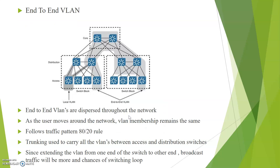So now let us go to end-to-end VLAN. End-to-end VLAN spans the entire network, meaning it is distributed over the entire network. Assume I have configured VLAN 2, 3, and 4 here — the same set of VLANs I will configure over this switch block also. So as the user moves around the network, the VLAN membership remains the same. Since this is an end-to-end VLAN, it follows the traffic pattern 80 by 20 — meaning 80% of the traffic stays within the local and 20% for accessing external resources.